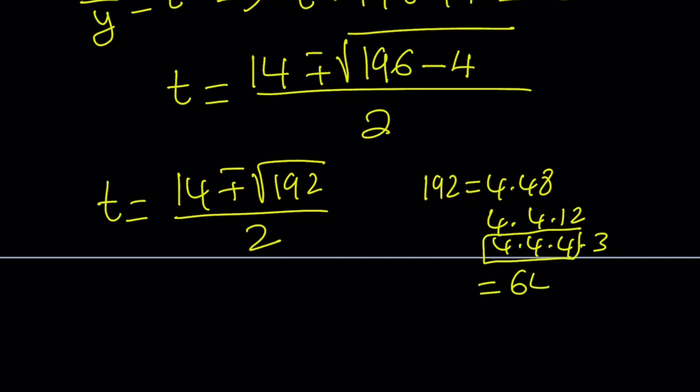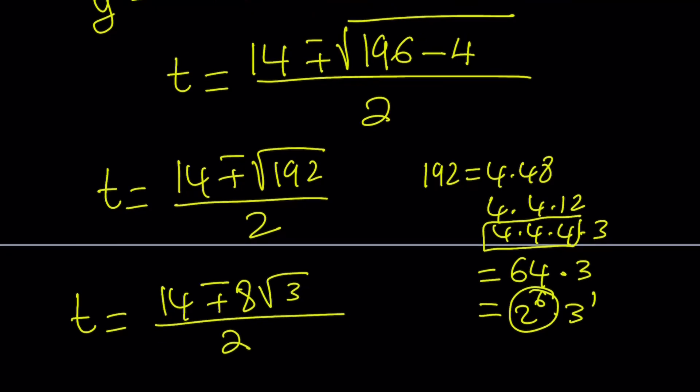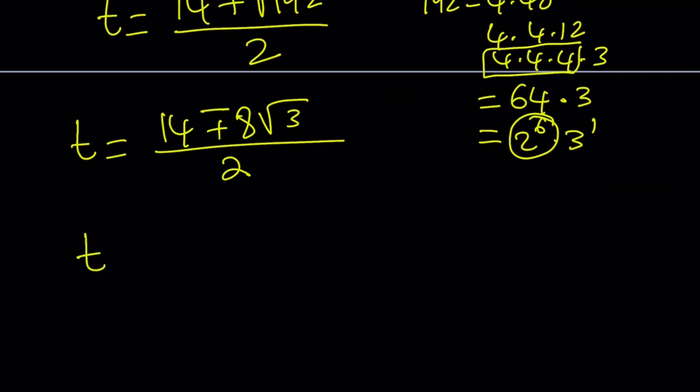In other words, 192 is 64 times 3, or 2 to the 6th power times 3 to the 1st power in the prime factorization form. And then if you square root it, 2 to the 6th power will be 8. Okay, t equals 14 plus minus 8 times the square root of 3 divided by 2. If you divide everything by 2, you get t equals 7 plus minus 4 root 3.